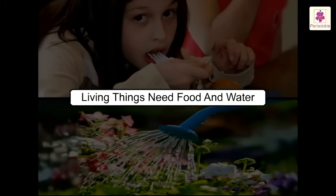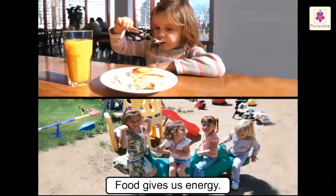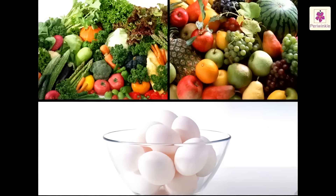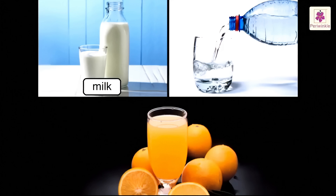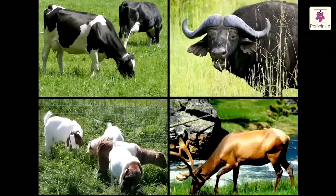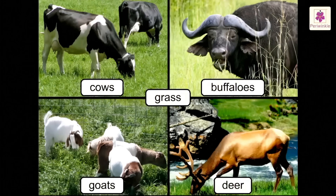Living things need food and water. All living things need food and water to live. Food gives us energy to do our work. We eat vegetables, fruits, egg, etc. We drink milk, water, juices, etc. Cows, buffalos, goats and deer eat grass.